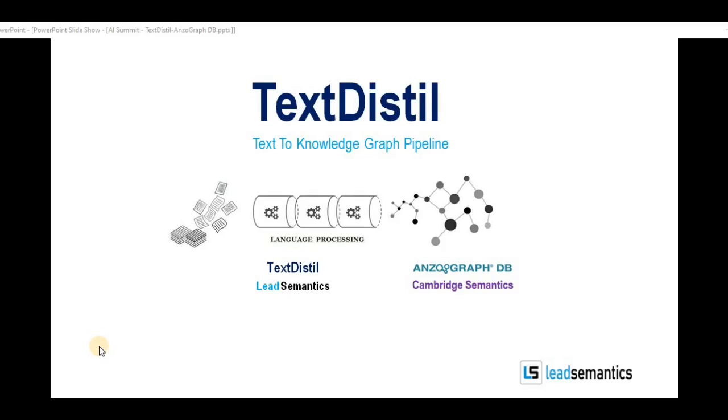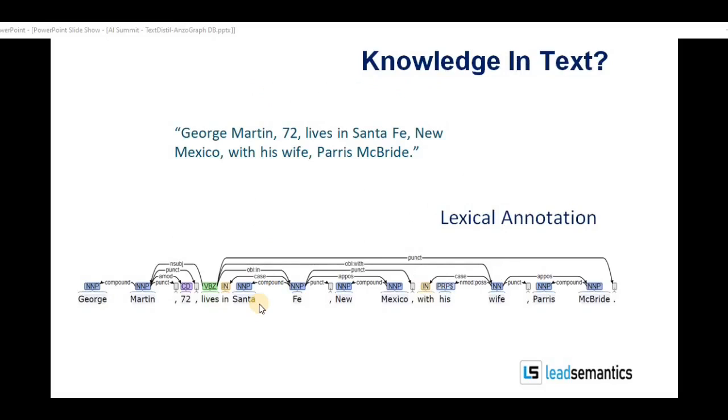AnzoGraph database from Cambridge Semantics is our destination triple store. Extracting knowledge from text, such as the English sentence seen here, involves several important stages of computation.